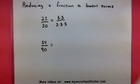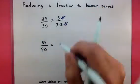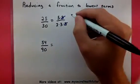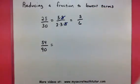Now when you look at it like this, you can see that there is a 5 common in the top and in the bottom. Let's go ahead and cross that off. Now whatever is left over is your reduced fraction, so 5 over 6.